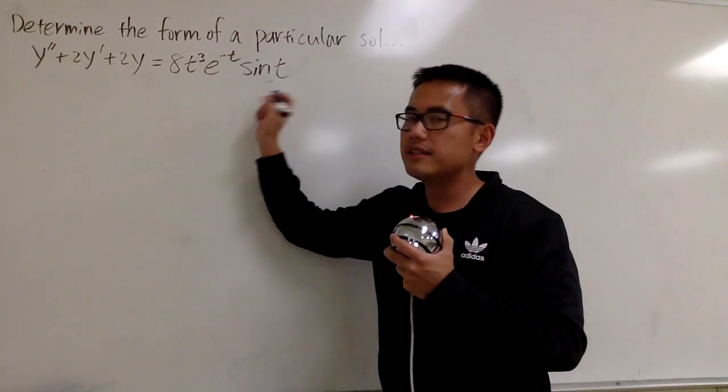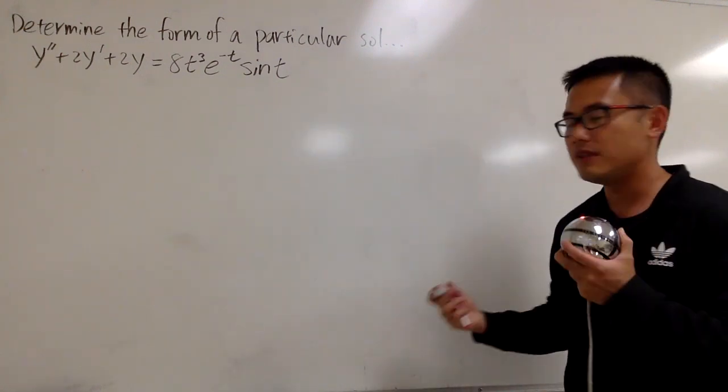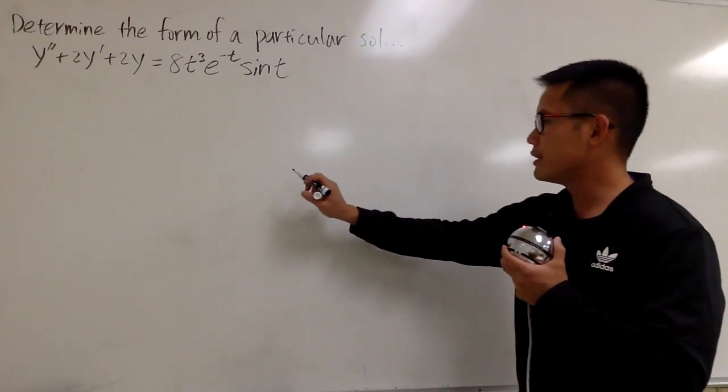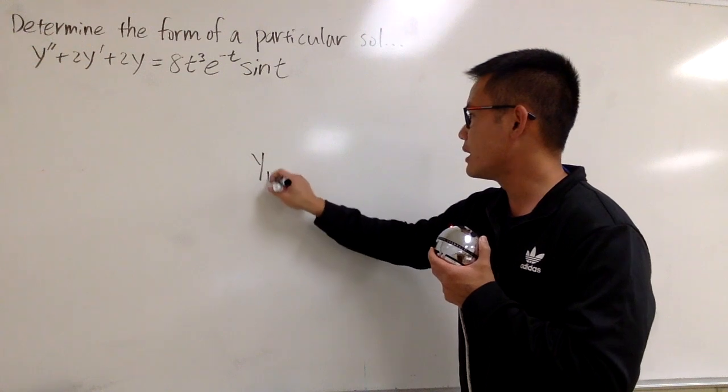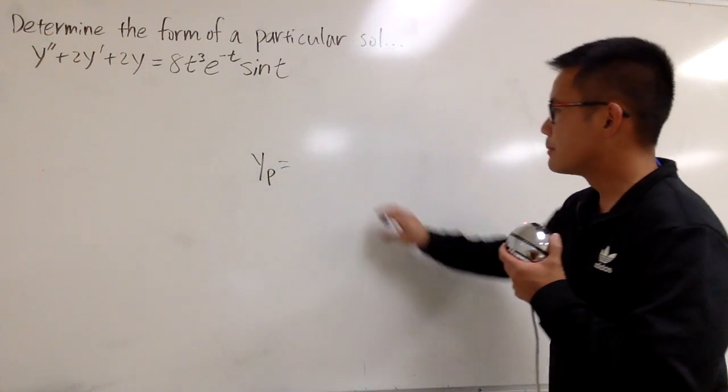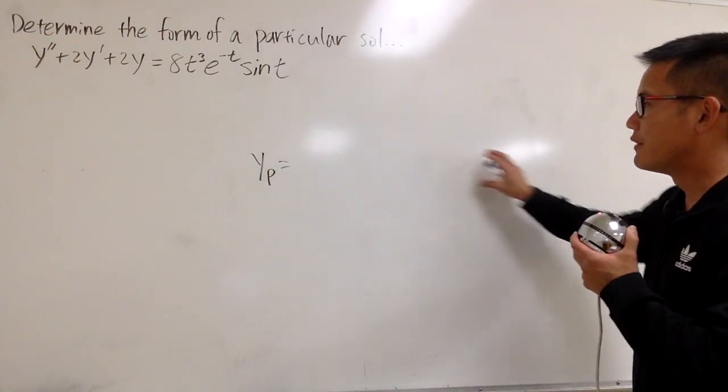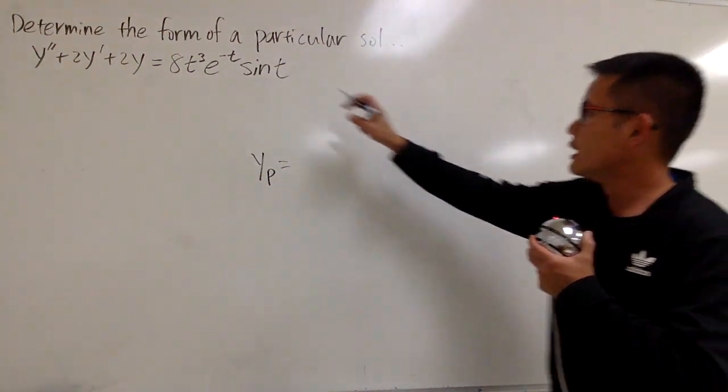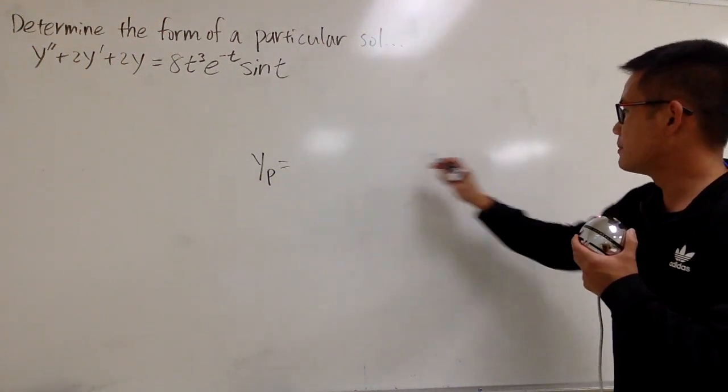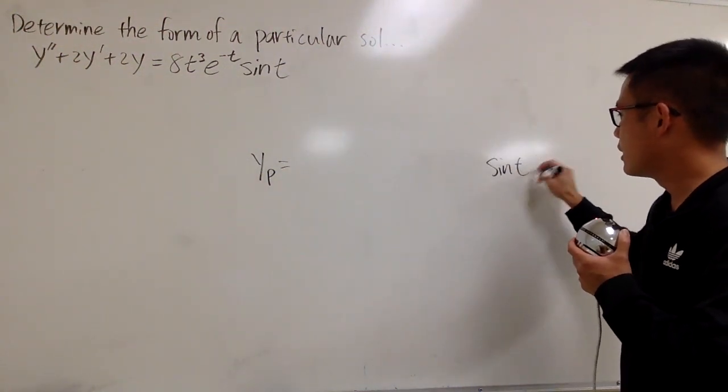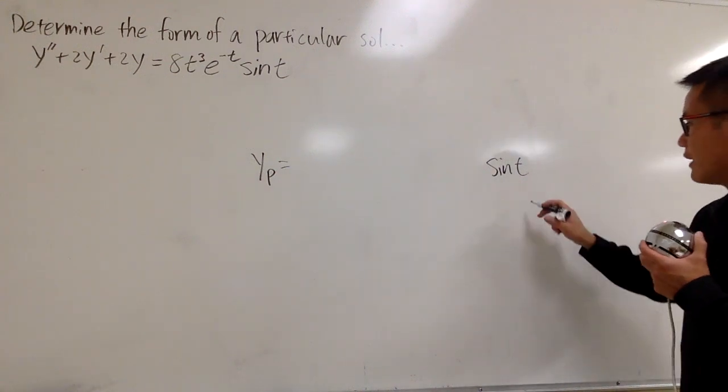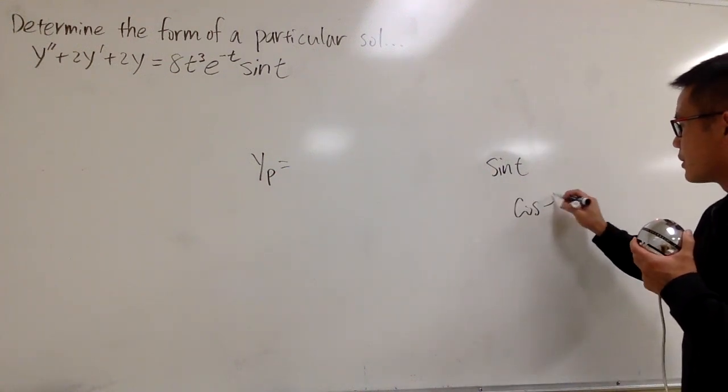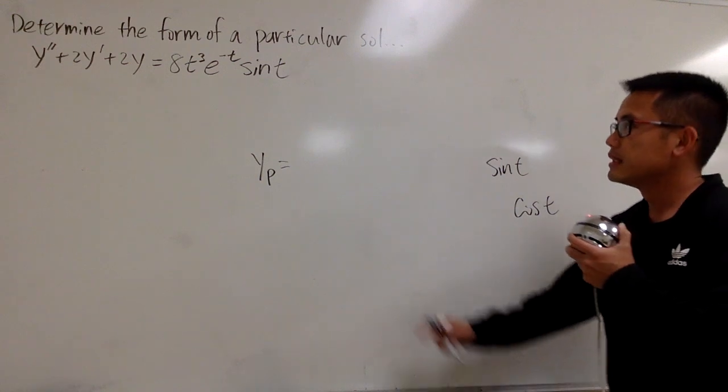Anyways, I'm just going to look at this and put down a form for yp first. So I'm just going to write it down here. Here's my yp. And I'm going to put this down in two lines. My first line is going to be for the sine t, and let me just leave enough space right here. Here's my sine t. And I will have a cosine t down below here.